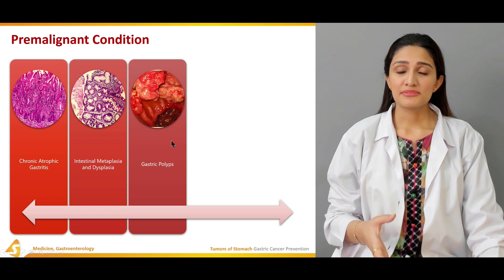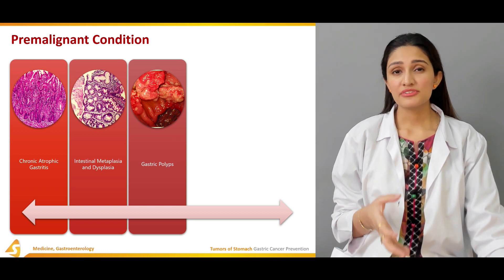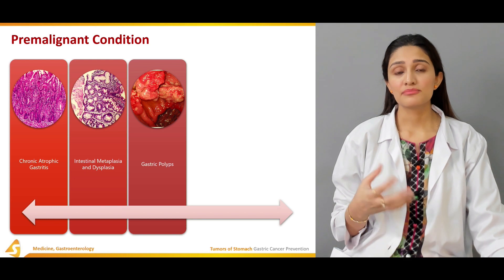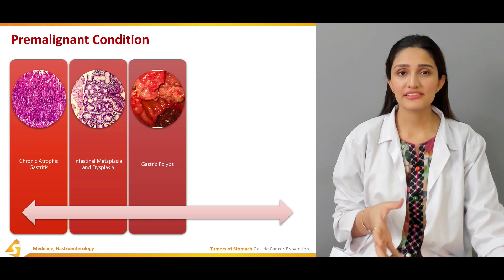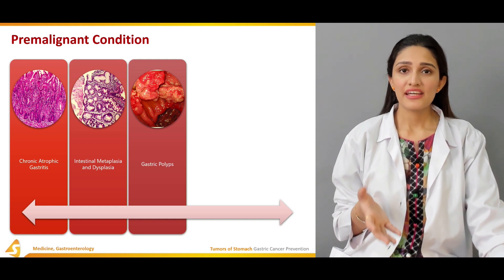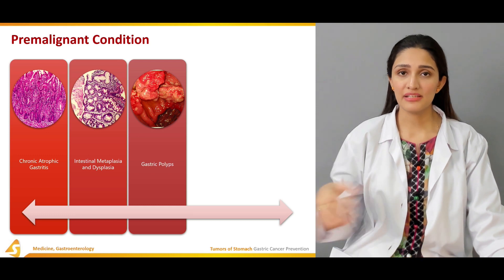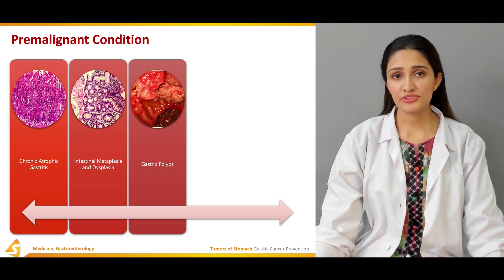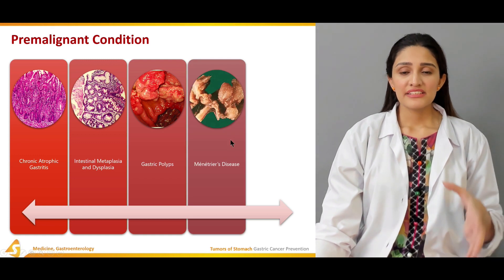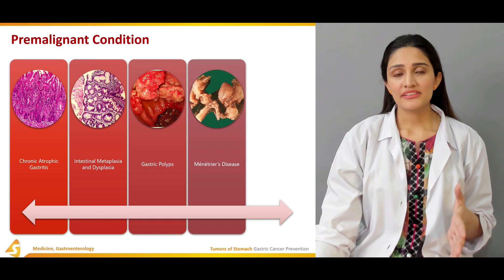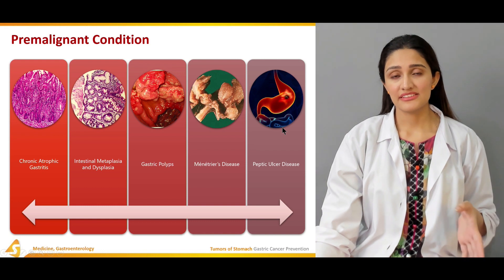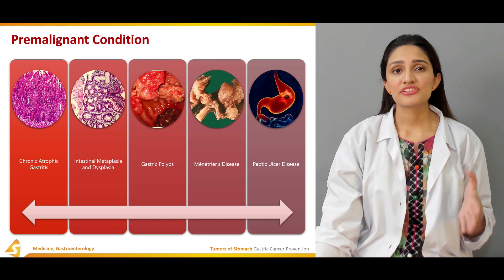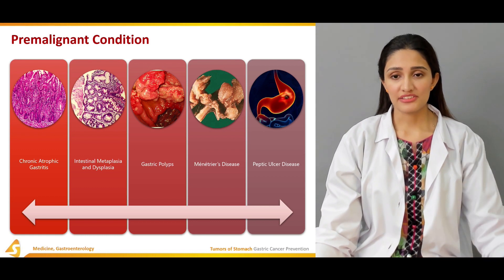Third are gastric polyps, with a prevalence of around 0.8 to 2.4%. The predominant type is the fundic gastric polyp at around 50%, followed by the hyperplastic gastric polyp at around 40%, and adenomatous polyps at around 10%. These polyps can also predispose to gastric cancer. Menetrier's disease — around 50% of patients are associated with gastric cancer. Lastly, peptic ulcer disease, caused by H. pylori infection, can slowly predispose to gastric cancer.